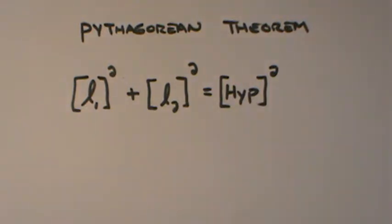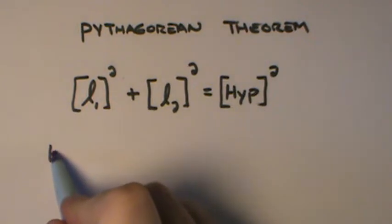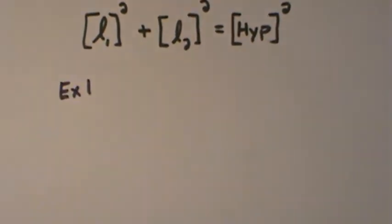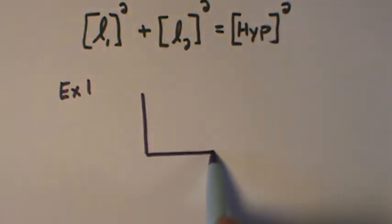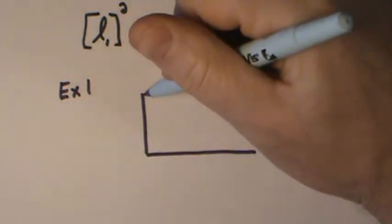Now how that works for us, we'll do a couple examples. Example 1: if you know you have a right triangle, this formula will allow you to find any missing side.